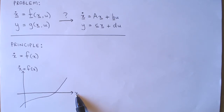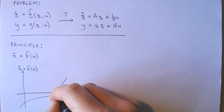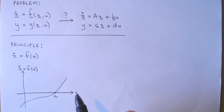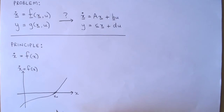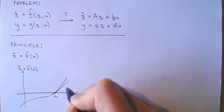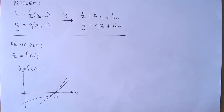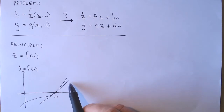A linear function would be a straight line, so the linearization problem is fitting a straight line that best approximates the non-linear function. To do this, we choose a point to linearize around, which we call x0. Then we calculate the slope of the non-linear function f at x0. The fitted straight line goes through x0 and has the same slope as the function f at x0. The straight line is a good approximation in the vicinity of x0, but not necessarily elsewhere.